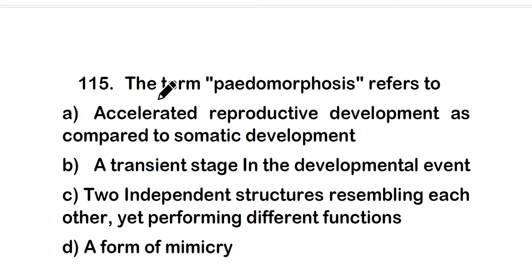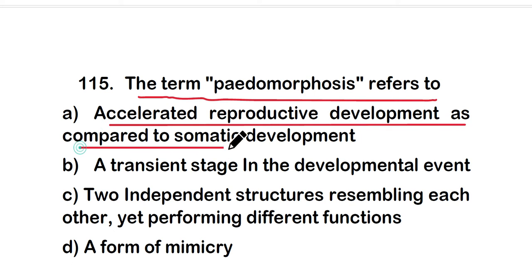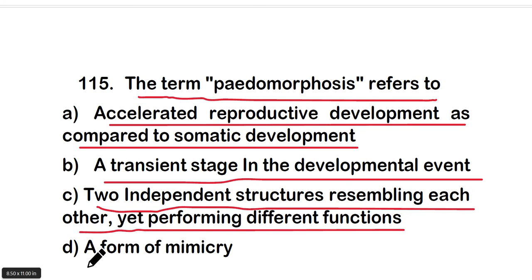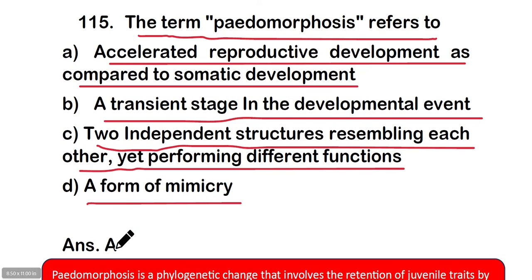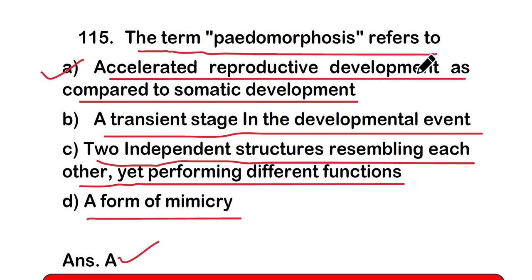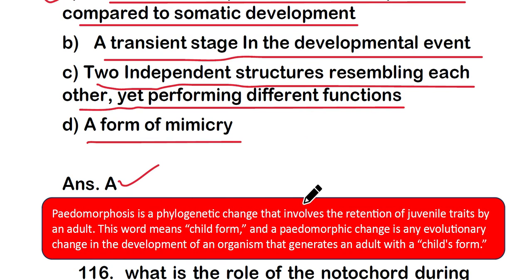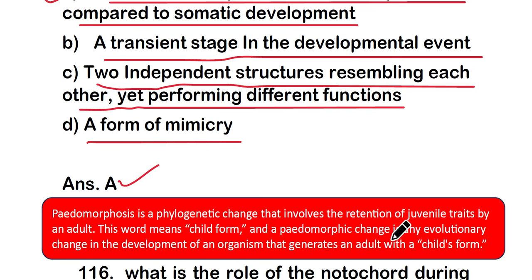Question 115: The term pedomorphosis refers to: (a) accelerated reproductive development compared to somatic development, (b) a transient stage in development, (c) two independent structures resembling each other yet performing different functions, or (d) a form of mimicry. The correct answer is option A. Pedomorphosis is a phylogenetic change involving the retention of juvenile traits by an adult — it means 'child form,' where an adult organism retains a child's form.